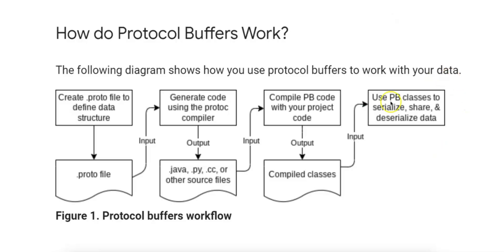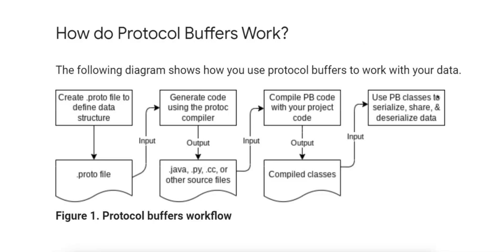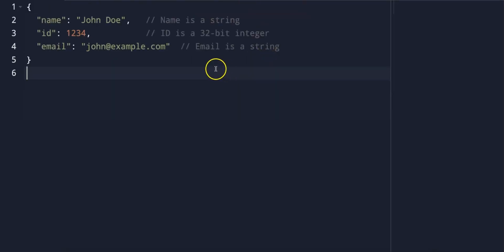The next step is serialization and deserialization. Serialization is the process of converting the message into a compact binary format, and deserialization converts the binary back into the original structured data. Let's take a look at the equivalent JSON representation of this .proto file. In JSON, field names like name, id, and email are repeated for every instance of the object. This adds redundancy, as each field name has to be explicitly written for every instance.